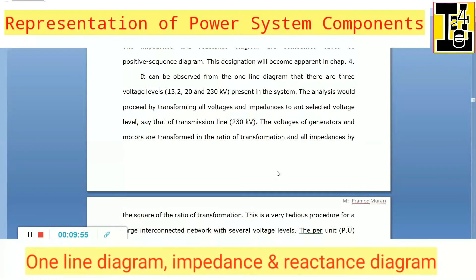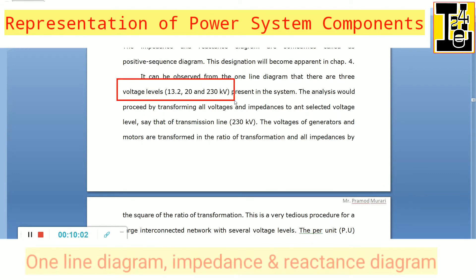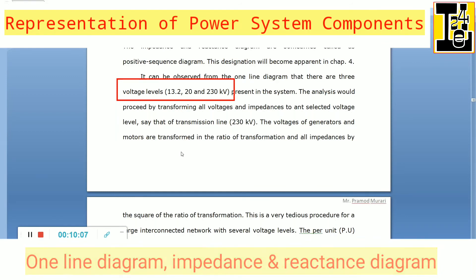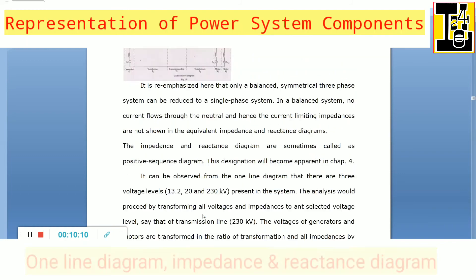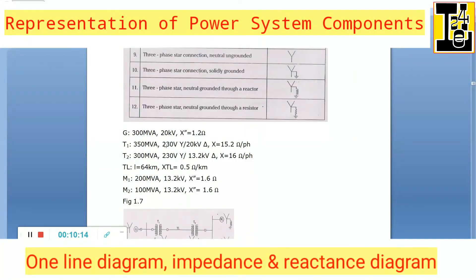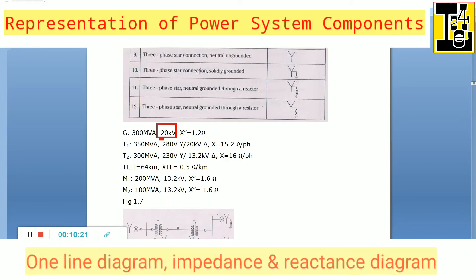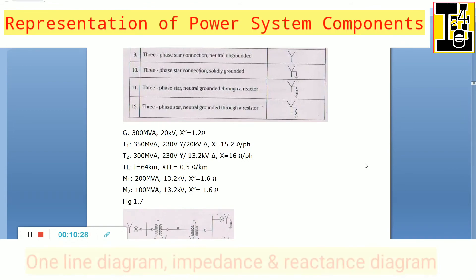From the one line diagram it can be observed that there are three voltage levels present in the system: 13.2 kV, 20 kV, and 230 kV.